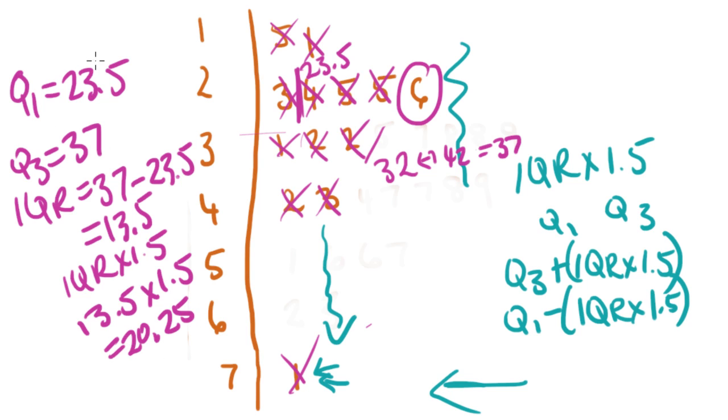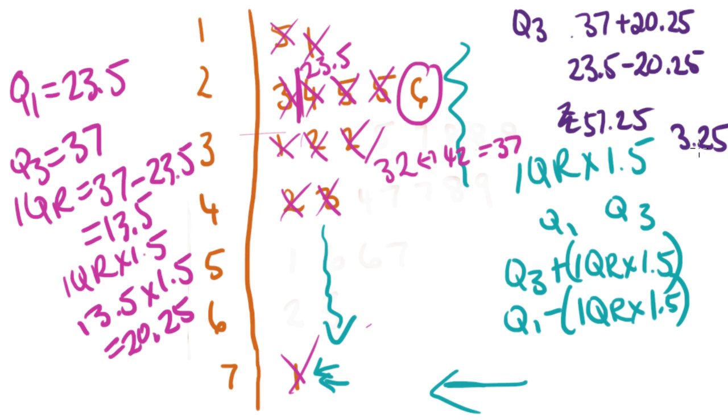And now I need to know that either side of Q1 and Q3. So we've got Q3, which is 37. So I've got 37 plus 20.25, and I want Q1, which is 23.5, minus this number here, 20.25 rather. And I'll get my range that the numbers need to fit within. So 37 plus 20.25 is 57.25. And this one here is 3.25. So anything lower than 3.25, anything higher than 57.25 is an outlier. So let's have a look again. What's this number? 71. Is it higher than 57.25? You betcha. So that definitely is an outlier. And that's how you work it out.